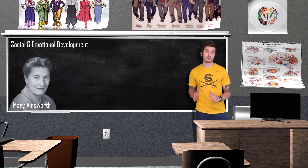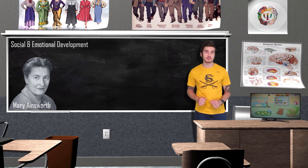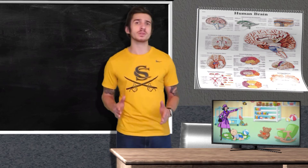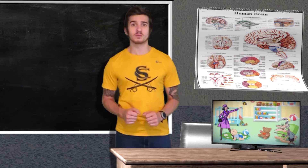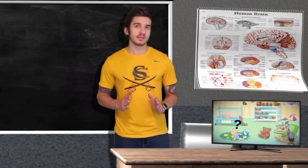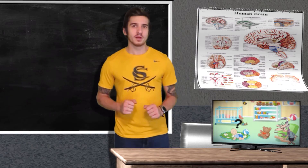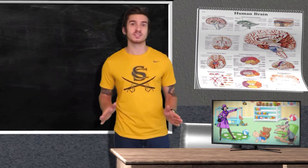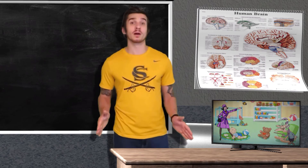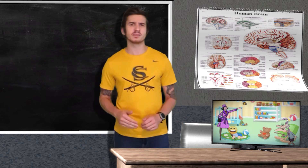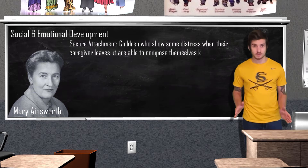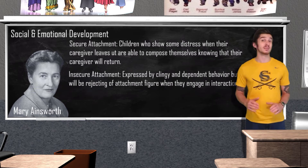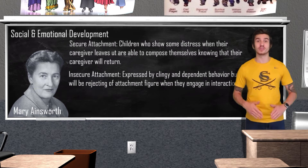Psychologist Mary Ainsworth, like Harlow, studied attachment. Ainsworth placed a mother and baby in an unfamiliar room with toys and an unfamiliar woman. The mother briefly left, then returned. Most babies happily played when mothers were present, explored the room, and were happy upon the mother's return — displaying secure attachment. Some babies displayed insecure attachment, becoming upset when the mother left but angry at her when she returned, and showed more inconsistent behavior overall.